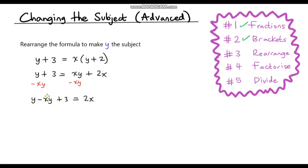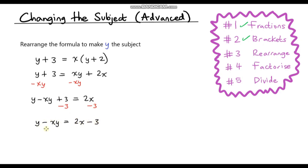We've almost got the y's on their own — we just need to get rid of this 3. So if we subtract 3 from both sides, we're left with y minus xy on the left — those 3's cancel — and on the right hand side we've got 2x minus 3. Now we have the y's on the left hand side and we don't need to do any more rearranging.